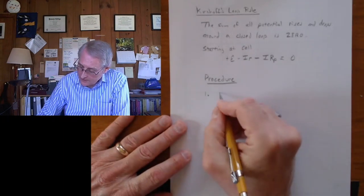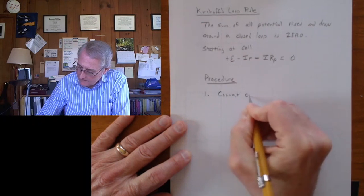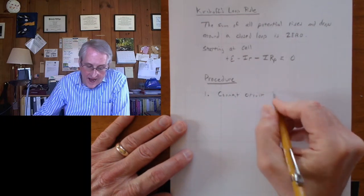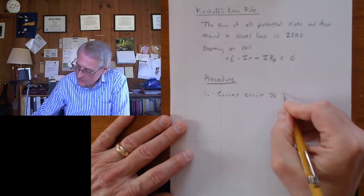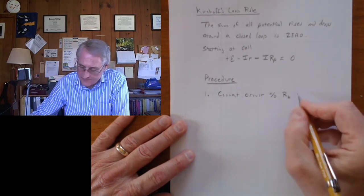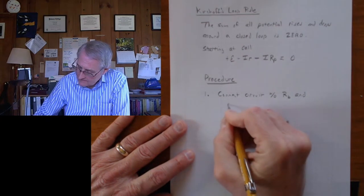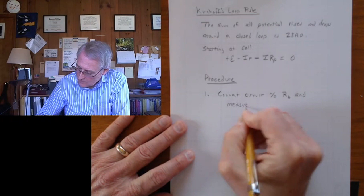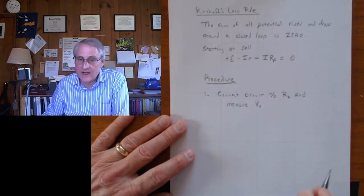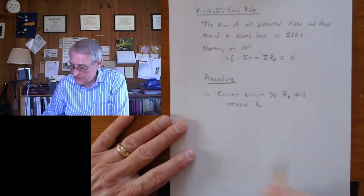First we'll connect the circuit without the box. And when you make the measurement of the voltage without the decade box in, that's called V naught.